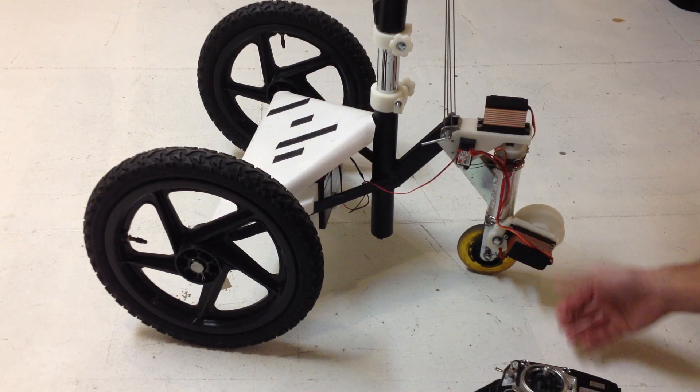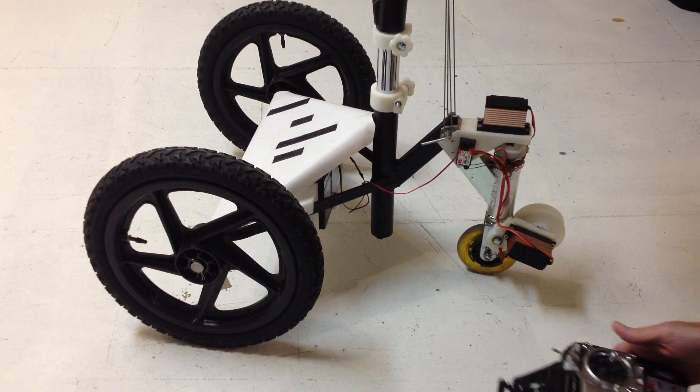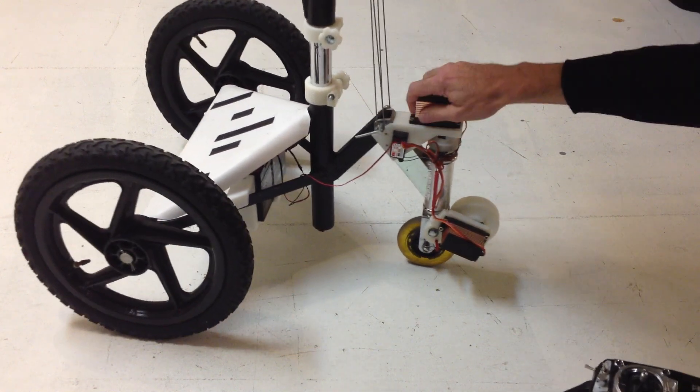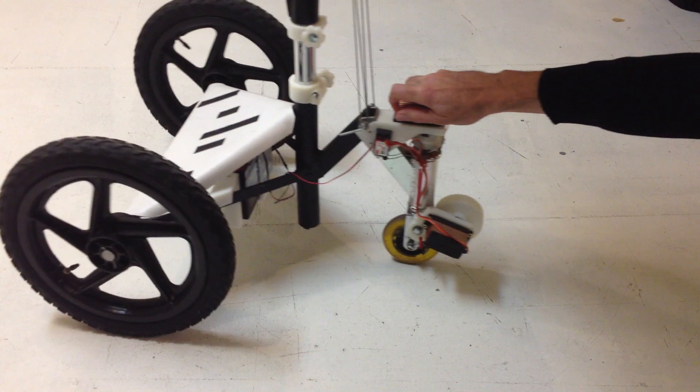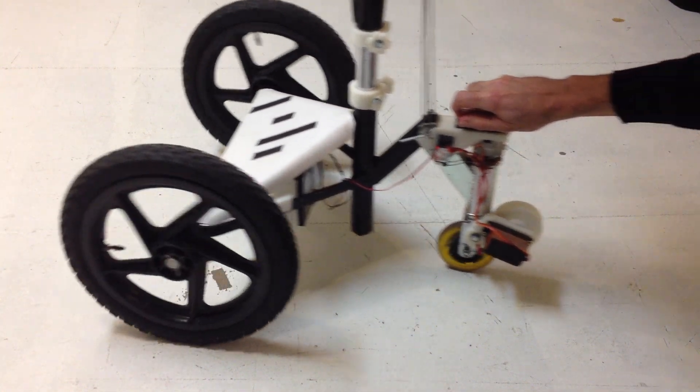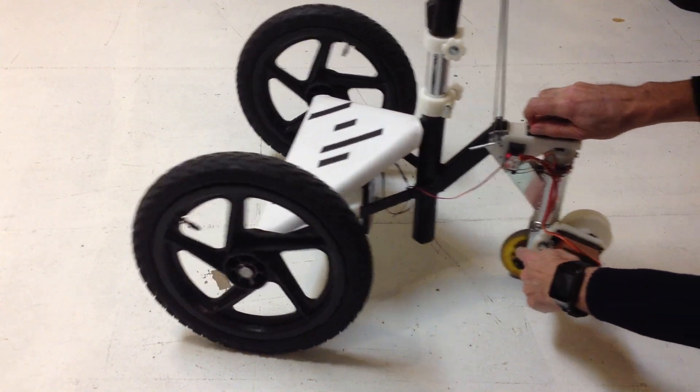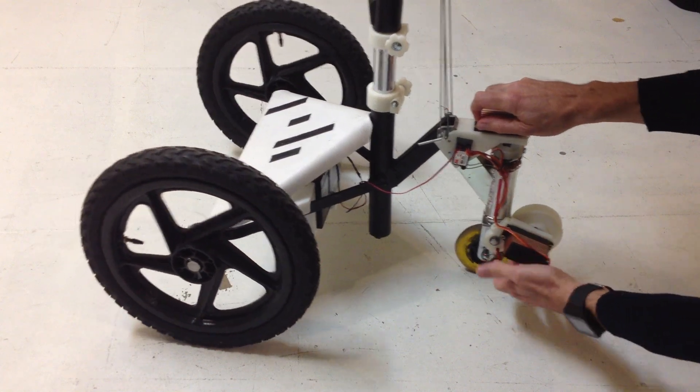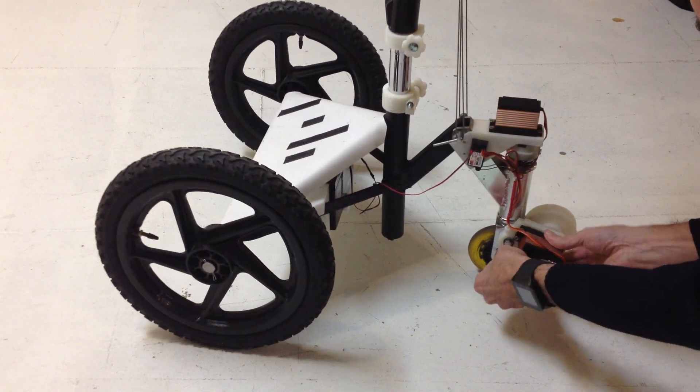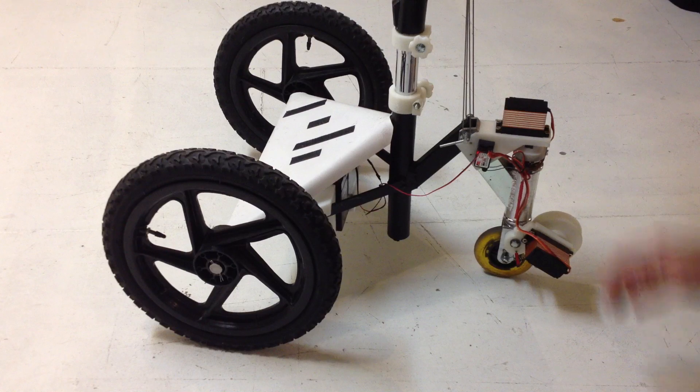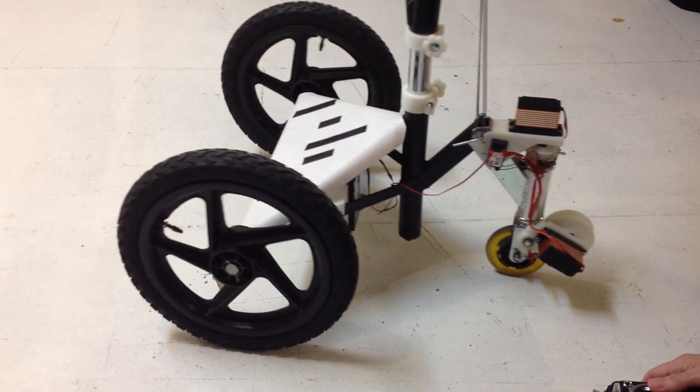I just unlock this like this and then I can push the whole robot like this because the wheel is free over here. The motor is not touching anymore. And then I can put it on like this to drive again.